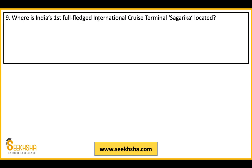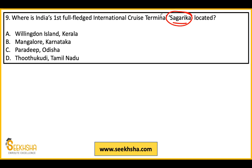Ninth question: Where is India's first full-fledged international cruise terminal 'Sagarika' located? A cruise terminal is where cruise ships — meant for passengers — dock and passengers board and unboard. Options: Willingdon Island Kerala, Mangalore Karnataka, Paradeep Odisha, or Thoothukudi Tamil Nadu. India's first full-fledged international cruise terminal is located on Willingdon Island, Kerala.